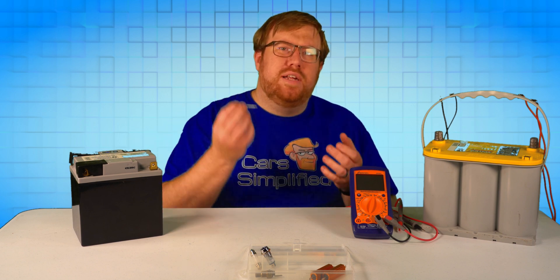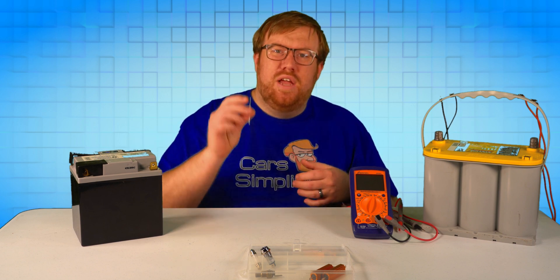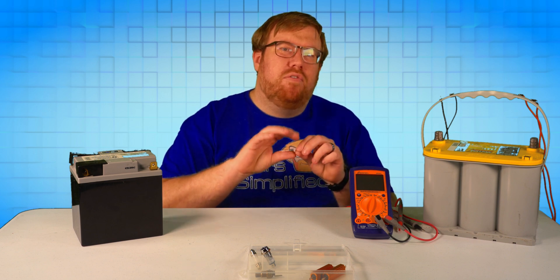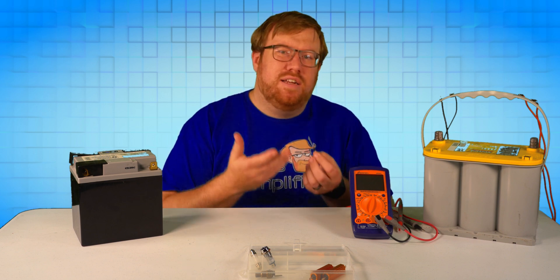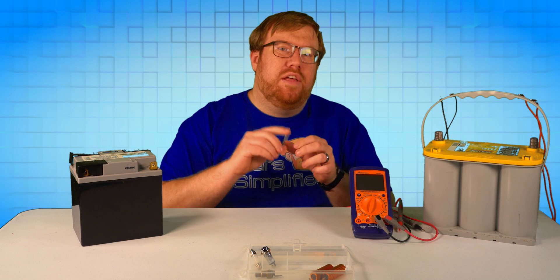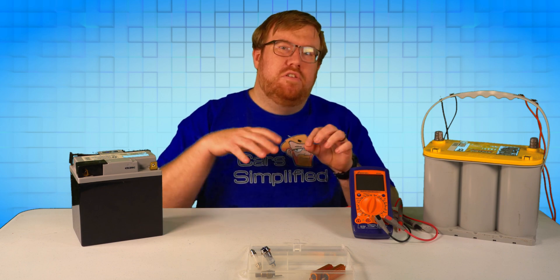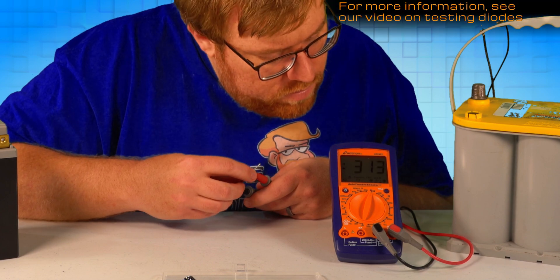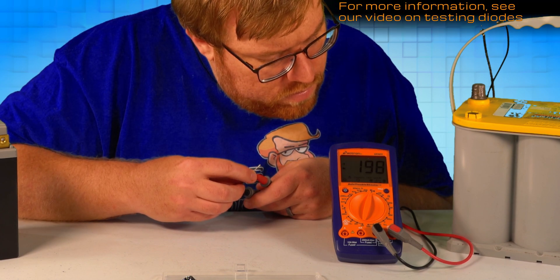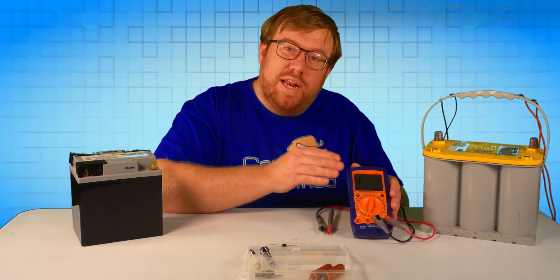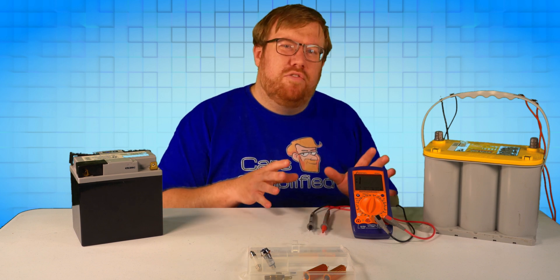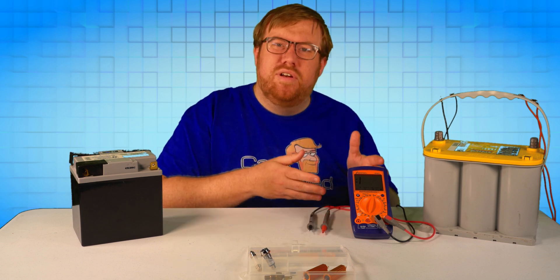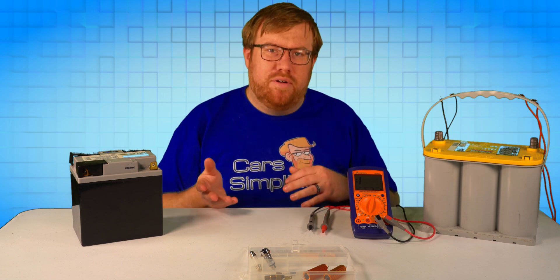This diode will be a good example of the limitations. In one direction, electricity is able to flow through the diode, so we get a continuity sound. However, in the other direction, we hear nothing, which makes sense, that's what a diode is supposed to do. With this model, you don't get any sound, you just get a reading on the screen. There will be a certain amount of resistance that will prevent the multimeter from making that tone, and it will differ from model to model.